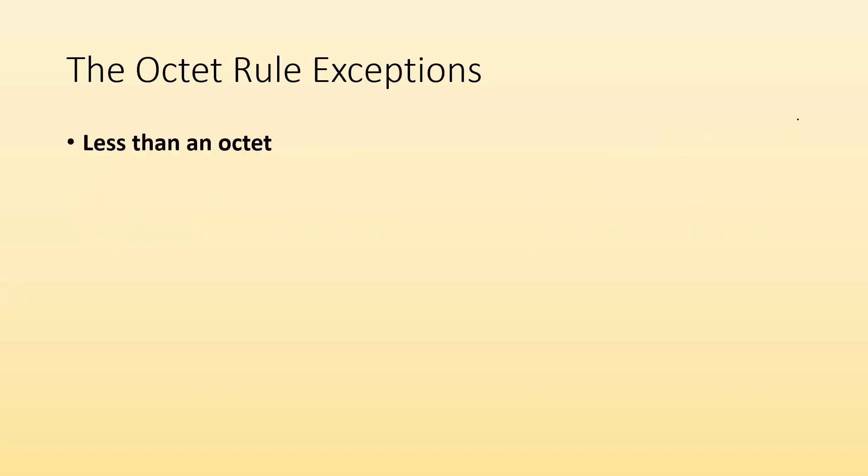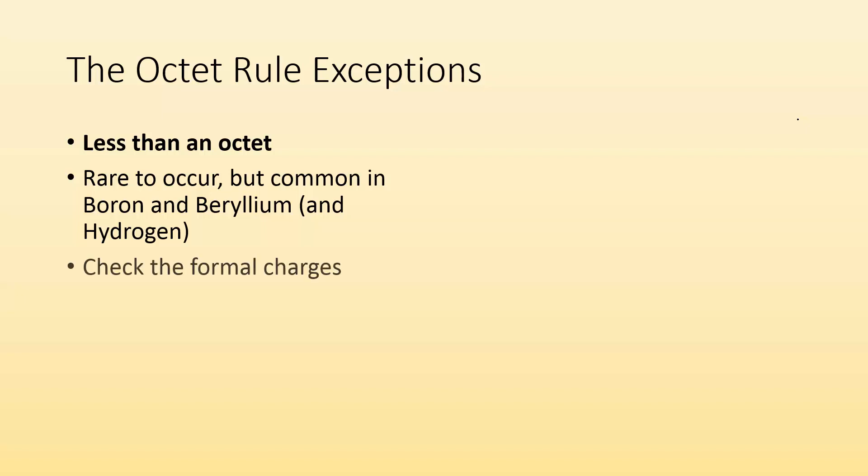Another exception is when you have less than an octet. So it's rare to occur, but common in a couple elements like boron and beryllium and hydrogen, but you probably are familiar with that about hydrogen. And the way to figure out if that's the best Lewis structure or not, where you have less than an octet, is to check the formal charges.